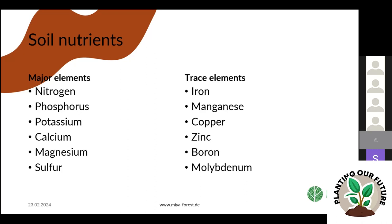Nutrients: we can distinguish between major elements — nitrogen, phosphorus, potassium, calcium, magnesium, and sulfur — and trace elements — iron, manganese, copper, zinc, boron, and molybdenum. Just so you've heard what kinds of nutrients we're dealing with.